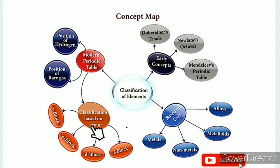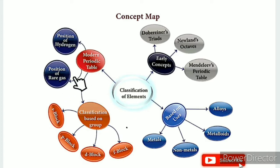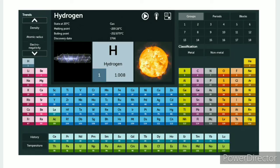This is the classification based on group, this is the SPDF block, and this is the position of hydrogen and rare gases, where you can find the elements in the ICT corner link. In the ICT corner, go to the Play Store and open it.